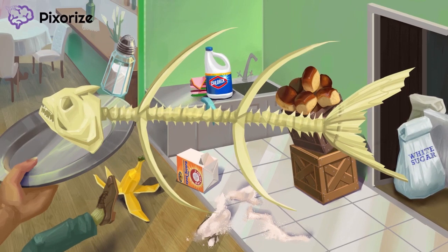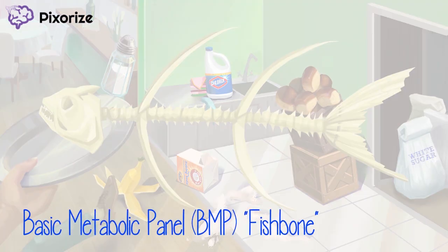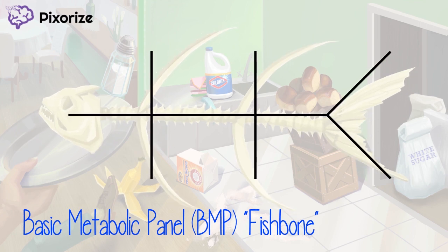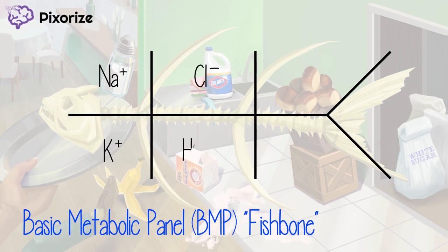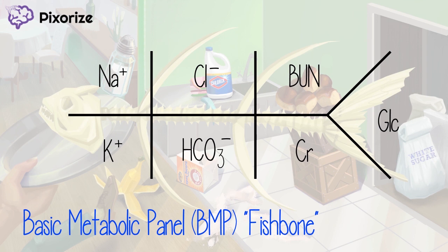And there we have it — the complete fishbone diagram. Let's do a quick recap. The BMP or CHEM-7 is a panel of laboratory values commonly measured in patients, usually presented in a fishbone diagram. Sodium is placed on the top left, with potassium below. Immediately right comes chloride on top, with bicarbonate below. Further right is BUN, with creatinine below that. And on the far right, we finish with glucose. That's it for our BMP fishbone mnemonic. In time you'll get so familiar with this diagram that all this will seem like second nature.